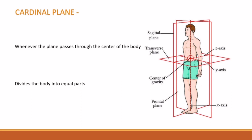The cardinal plane divides the body into equal parts. One important point to note is that the point at which the three cardinal planes intersect each other is the center of gravity. The center of gravity of the human body is a hypothetical point around which the force of gravity appears to act — it is the point at which the combined mass of the body appears to be concentrated.